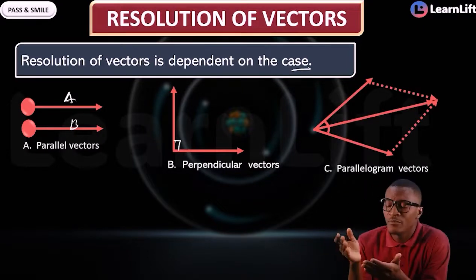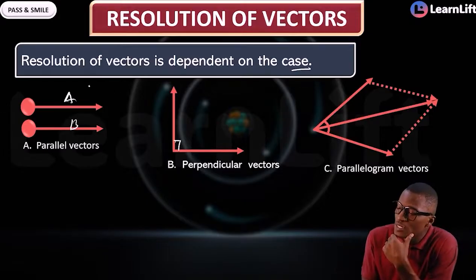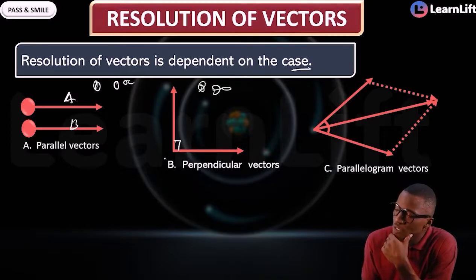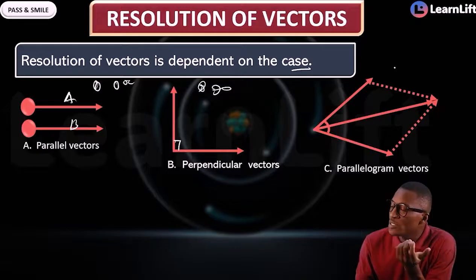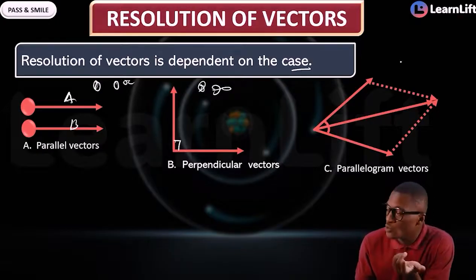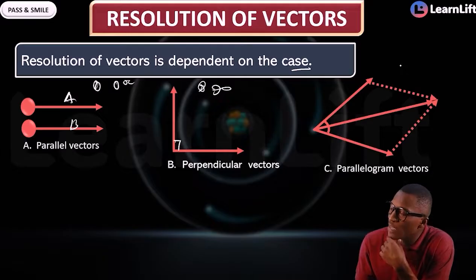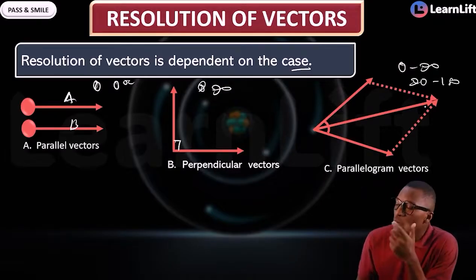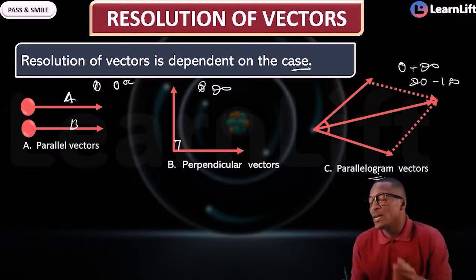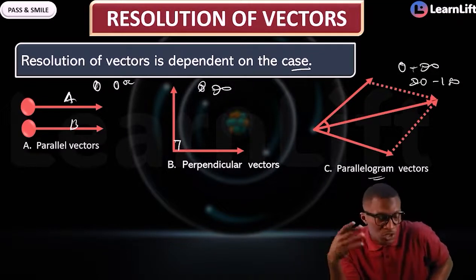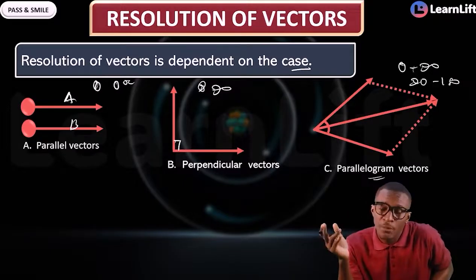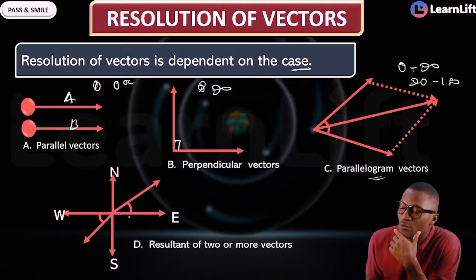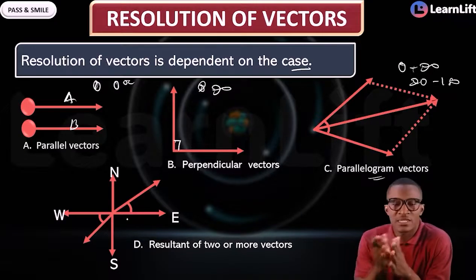Number three: when the vectors are inclined. In the first case, the angle is zero degrees; in the second case, the angle is 90 degrees. In the inclined case, the angle is either acute (between 0 and 90 degrees) or obtuse (between 90 and 180 degrees). For angles between 0 and 180 degrees, we use the parallelogram law or the triangle rule. The fourth case involves horizontal and vertical component vectors.